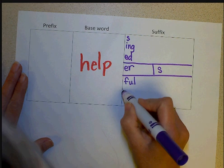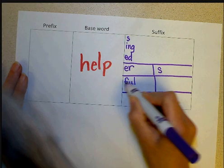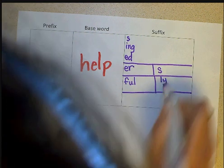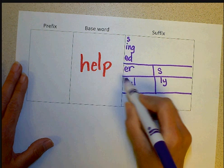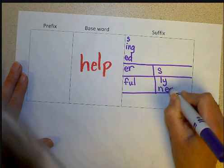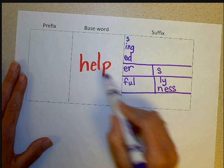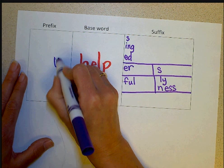Or I could do helpfully. So since I have to go through the full, I'm going to have to draw a line and create a box. Helpfully. Or I could also do helpfulness. So again, I'm going through the full box and then adding the suffix ness.